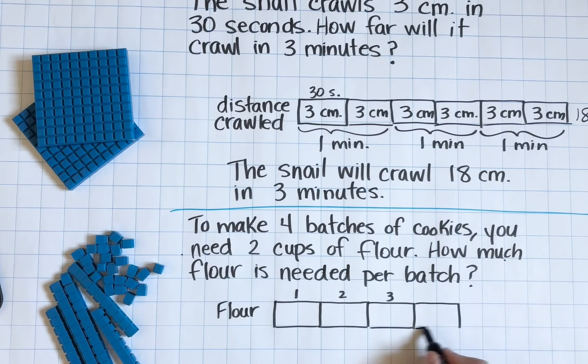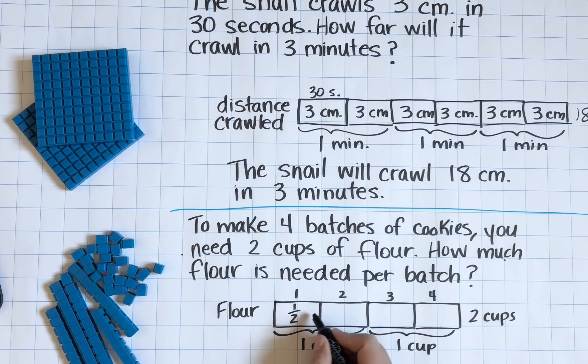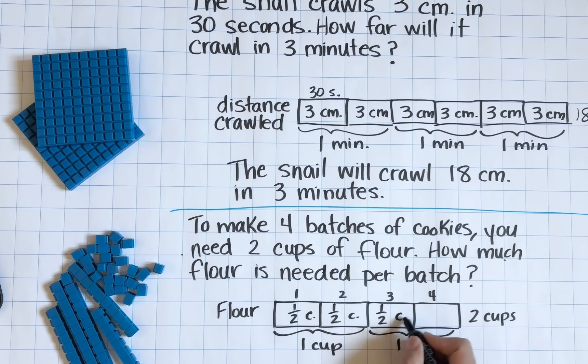Here you'll see I'm drawing a bar model. I'm using each section of the model to represent one batch of cookies. So it becomes really clear to me and very simple to understand that I need to divide that two cups of flour into four equal parts so that each batch needs half a cup of flour.